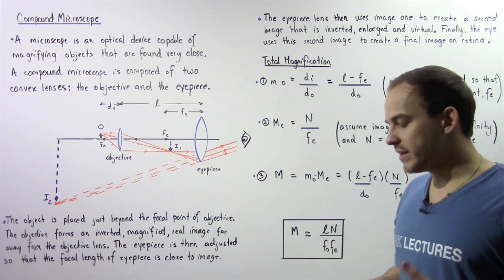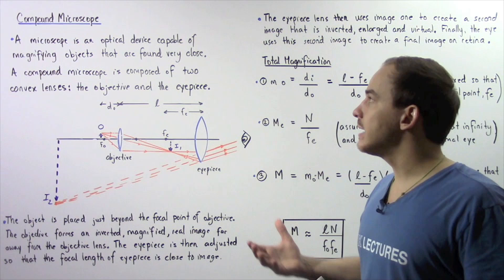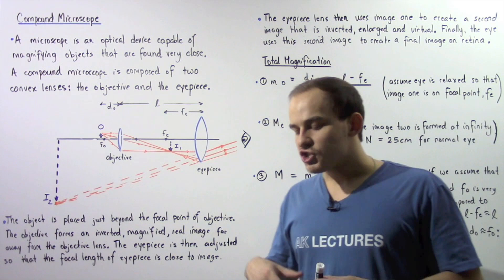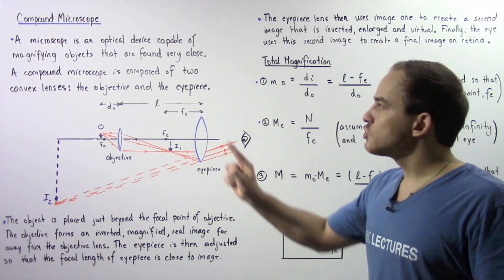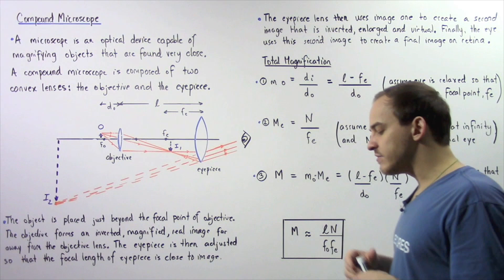Previously we discussed an optical instrument known as a telescope, which is able to magnify objects found very far away. Now we're going to discuss a second type of optical device capable of magnifying objects found very close — a microscope. A microscope is an optical device capable of enlarging or magnifying objects that are found very close.